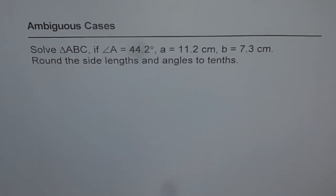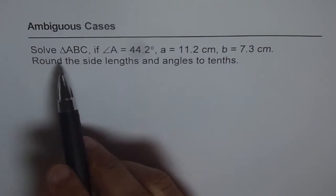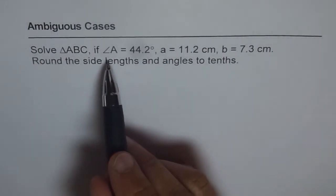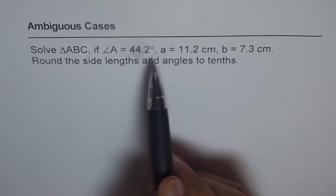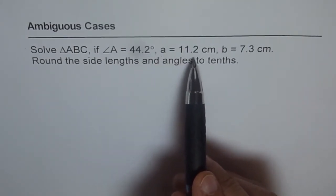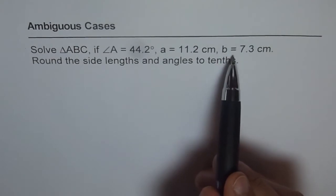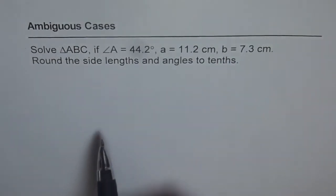Ambiguous cases. This one is for you to try. The question is solve triangle ABC, if angle A equals 44.2 degrees, side opposite to A, which is a equals 11.2 centimeters, b equals 7.3 centimeters. Round the side lengths and angles to tenths.